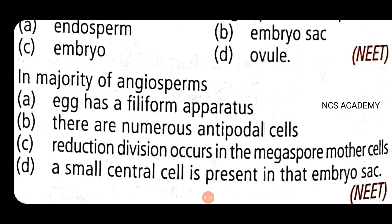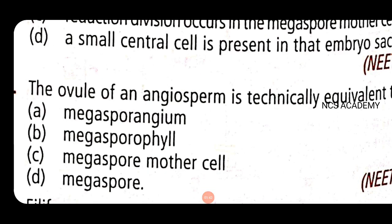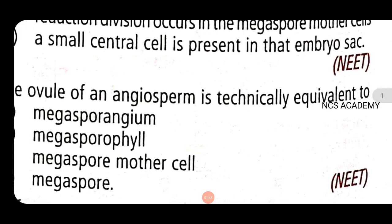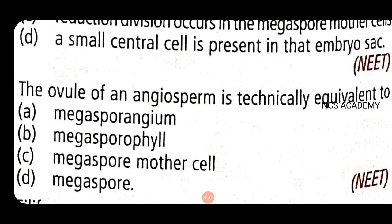Next gynoecium example: the ovule of an angiosperm is technically equivalent to a megasporangium. The ovule is technically termed as an integmented megasporangium. The ovule of an angiosperm is equivalent to an integmented megasporangium.